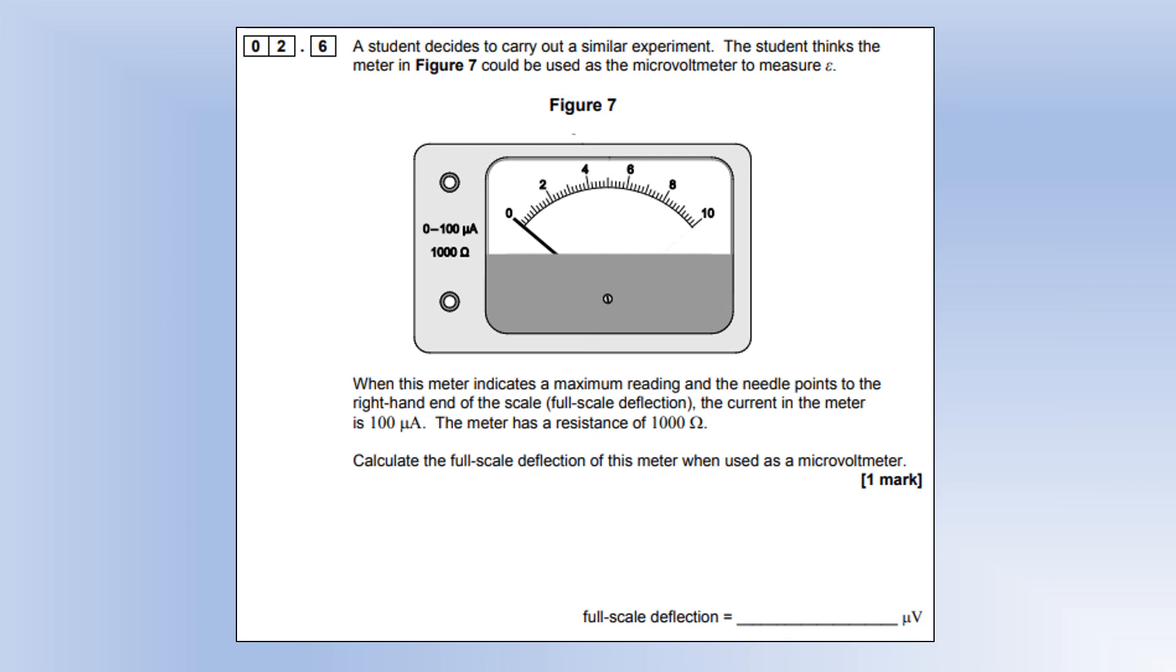A student decides to carry out a similar experiment. The student thinks the meter in Figure 7 could be used as a microvolt meter to measure EMF. When the meter indicates a maximum reading and the needle points to the right-hand end of the scale, the current is 100 microamps and the resistance is 1000 ohms. Calculate the full scale deflection of this meter when used as a microvolt meter. Potential difference is current times resistance, so we can get that it's 0.1 volts or 10⁵ microvolts.